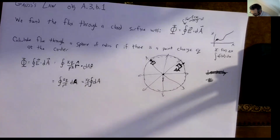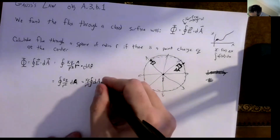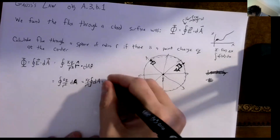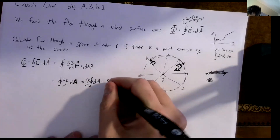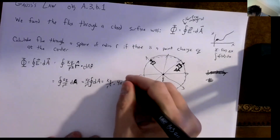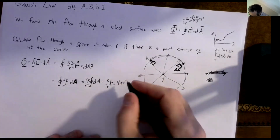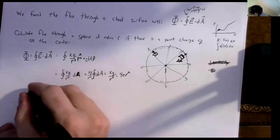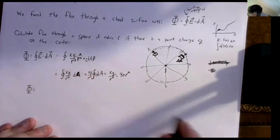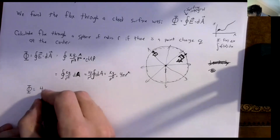Does anybody remember what the surface area of a sphere is? It's 4πr². So that means the flux through the sphere is kq over r squared times 4πr², and the r squareds cancel out.